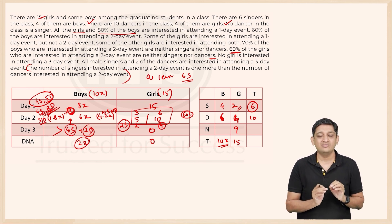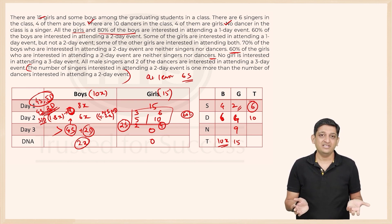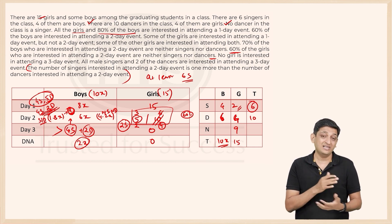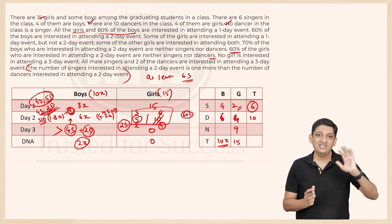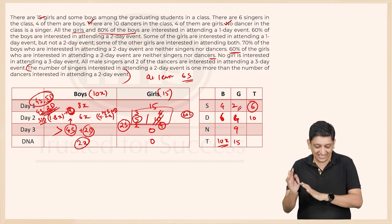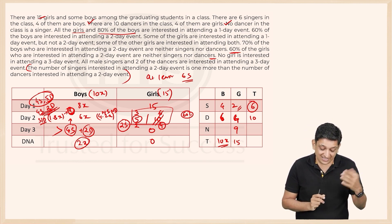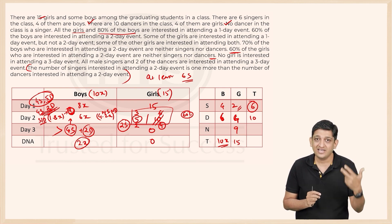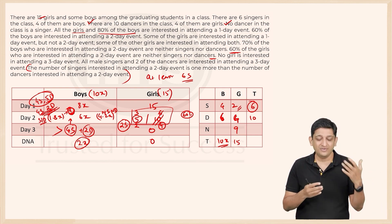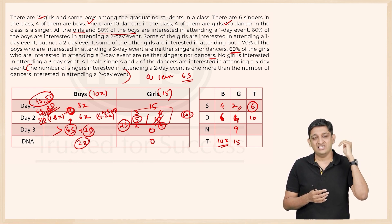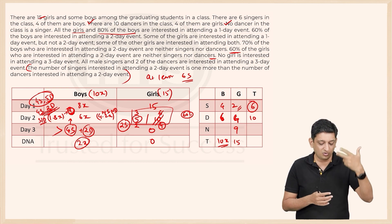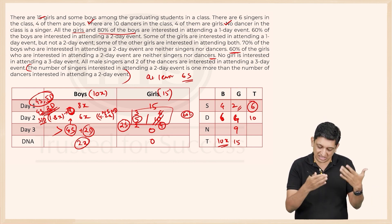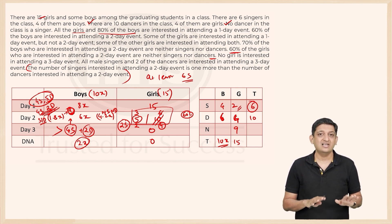With all of this established: x equals 5, total boys is 50. 40 boys are interested in the one-day event, 30 boys in the two-day event, 4 boy singers and 5 boy dancers for day 2, 21 boys neither singers nor dancers for day 2, and 10 boys not interested at all. All 15 girls are interested in day 1, 5 girls in day 2 with 2 singers and 3 neither.